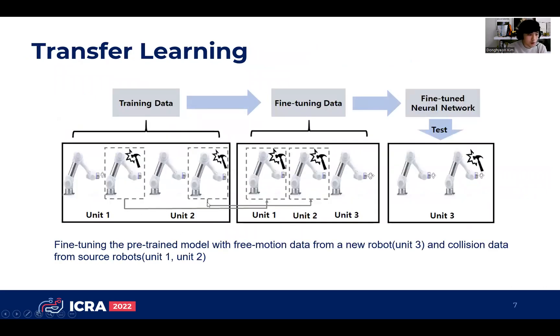For transfer learning, fine-tuning the pre-trained model with free-motion data from a new robot and collision data from a source robot is proposed.